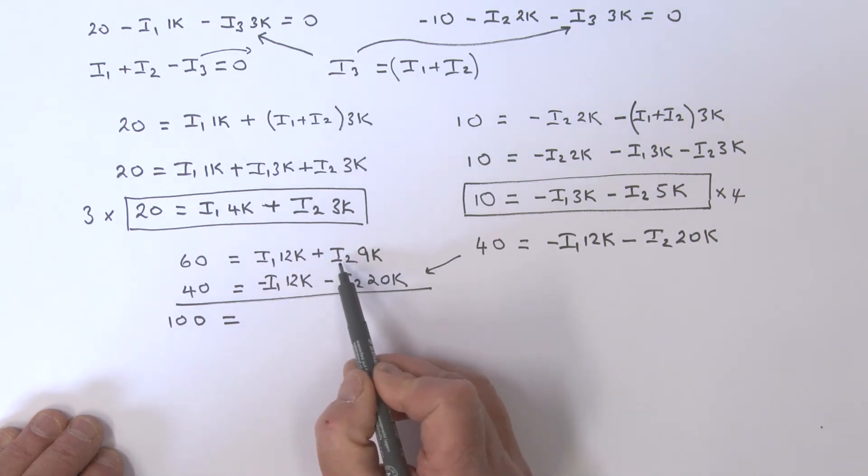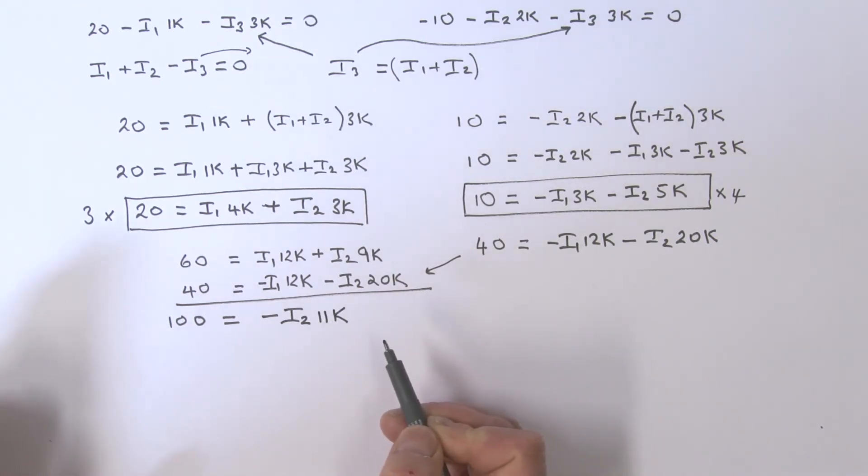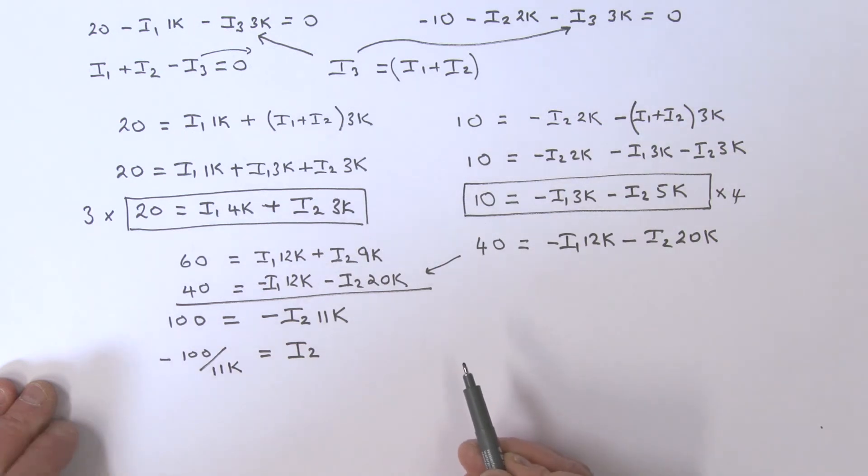Then I've got 9k i2s and minus 20k i2s. So what do I have? I have minus i2 times 11k. And so therefore, i2 is simply equal to minus 100 divided by 11k.